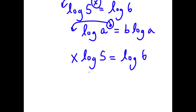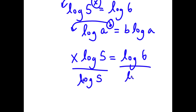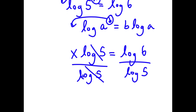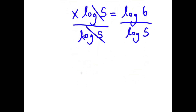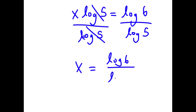Now I'm going to divide both sides by log 5 because we want to isolate x. These two cancel out and I'll have x is equal to log 6 over log 5.